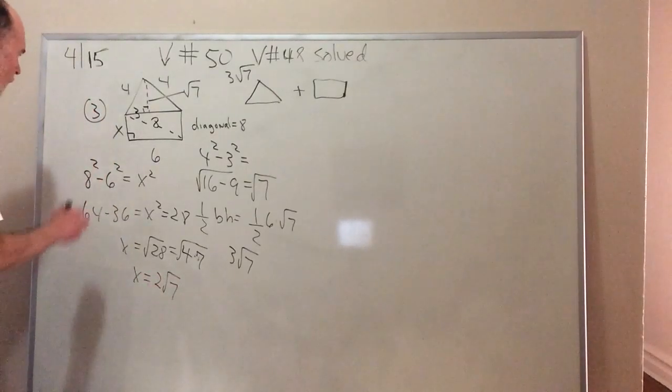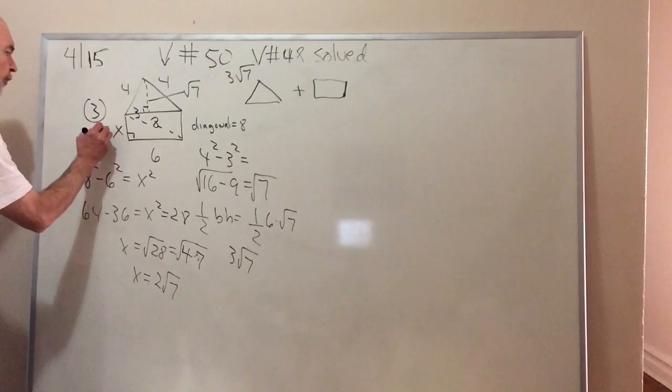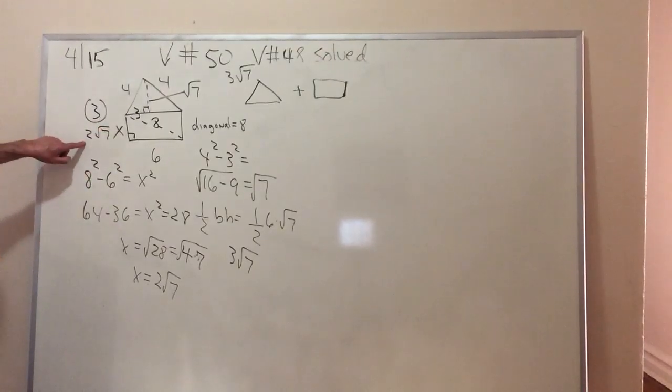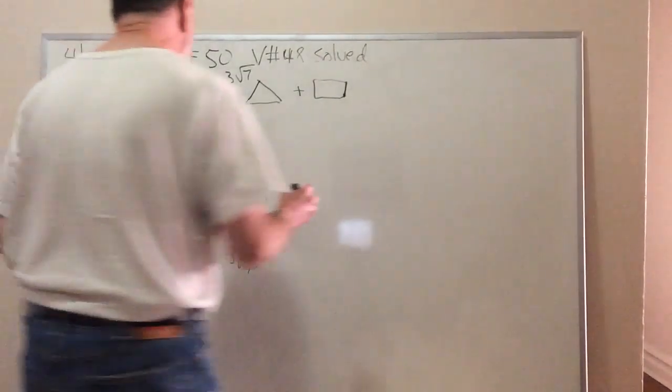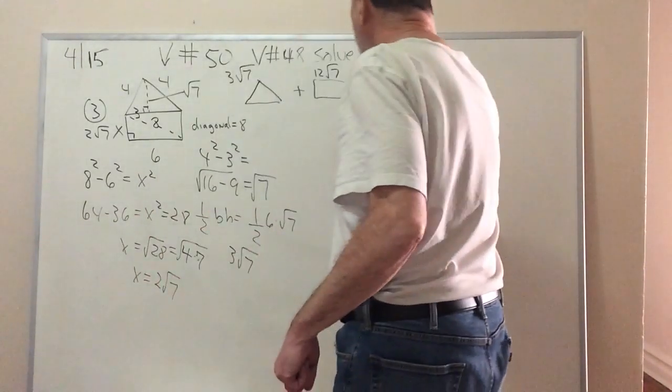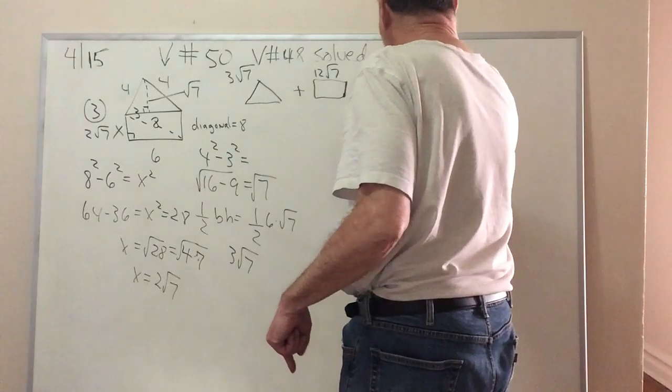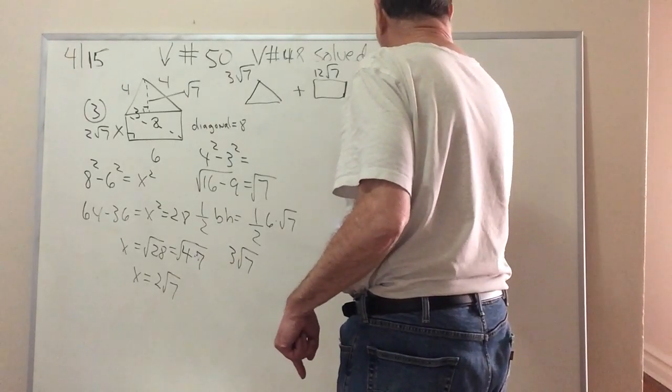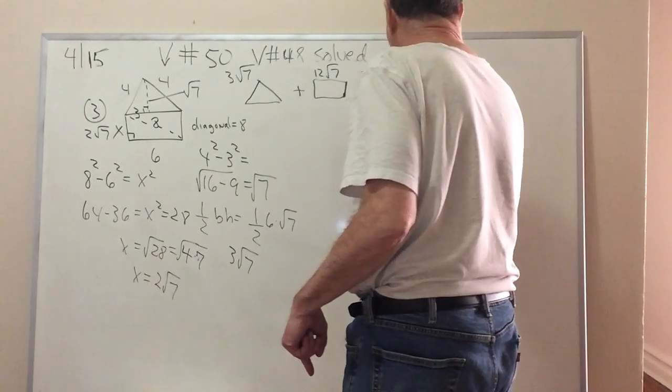Oh, okay. So the side here is 2 radical 7. So 2 radical 7 times 6 is 12 radical 7. Add them all together. And the area is 15 radical 7 square units.